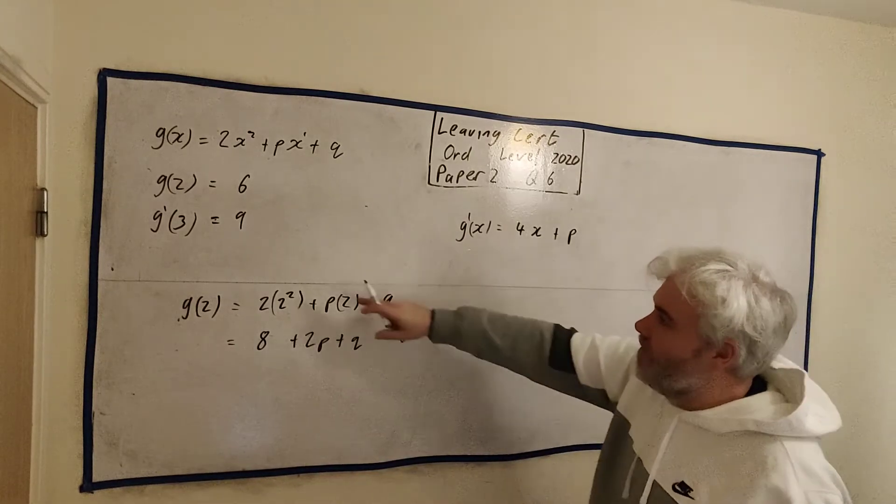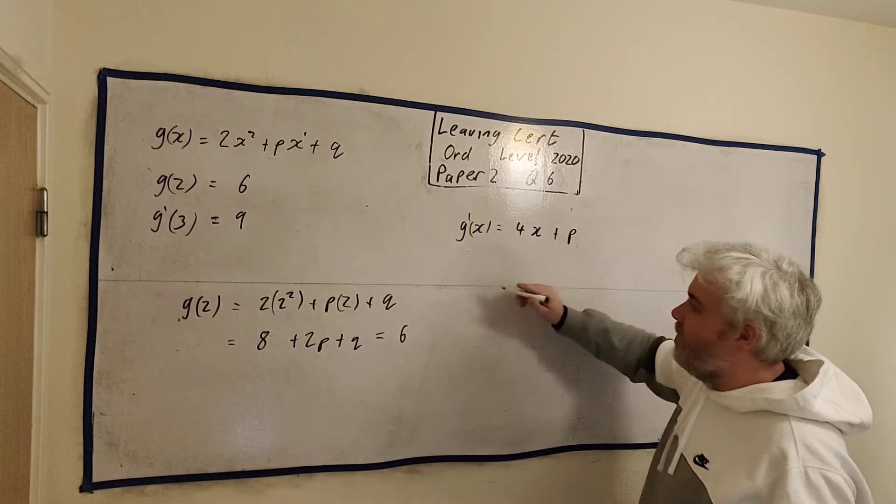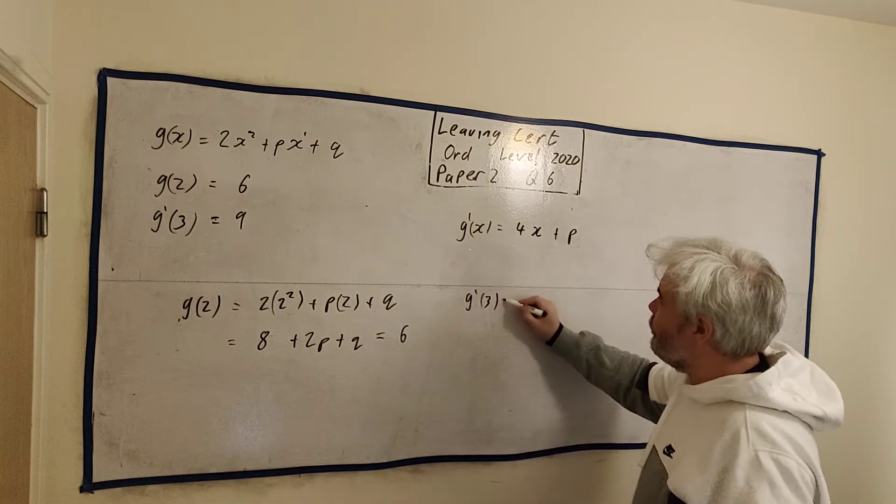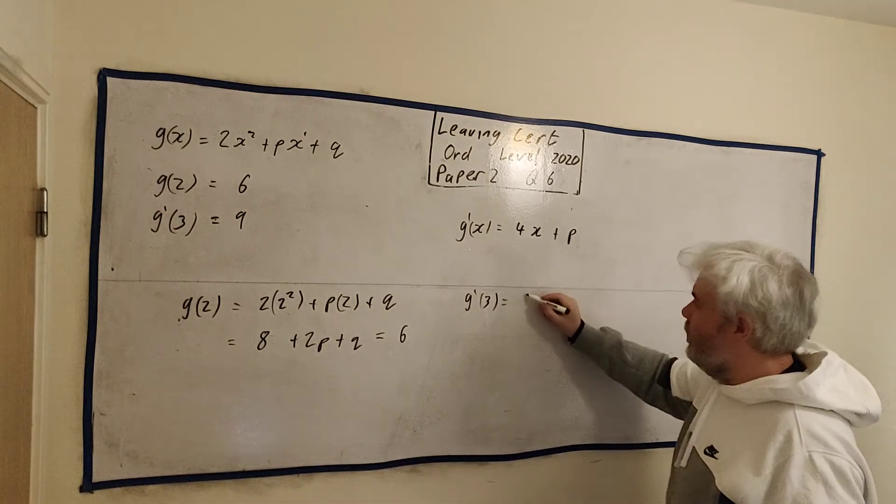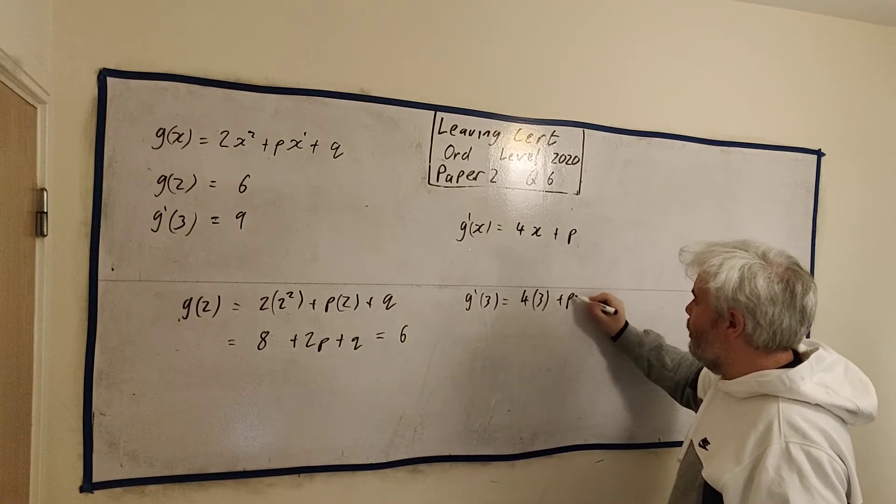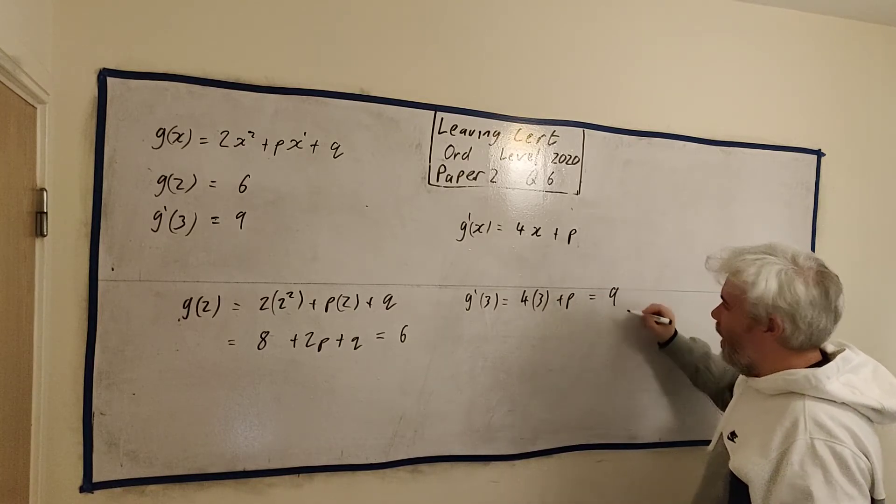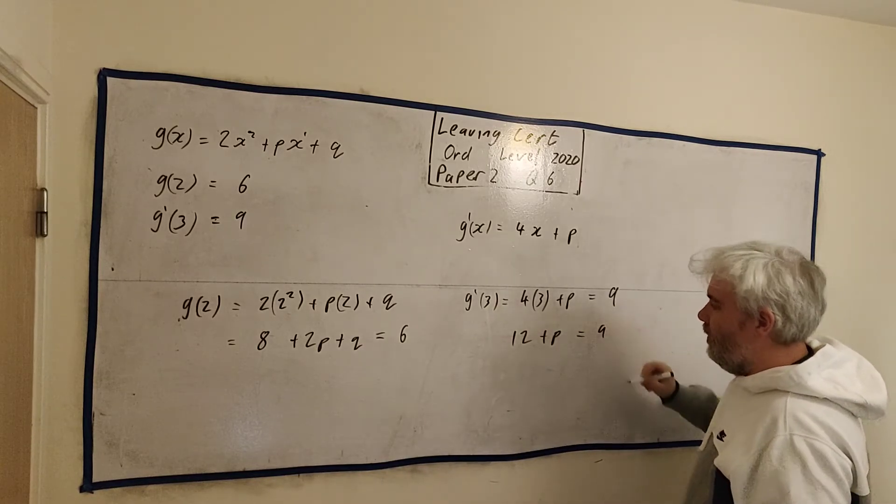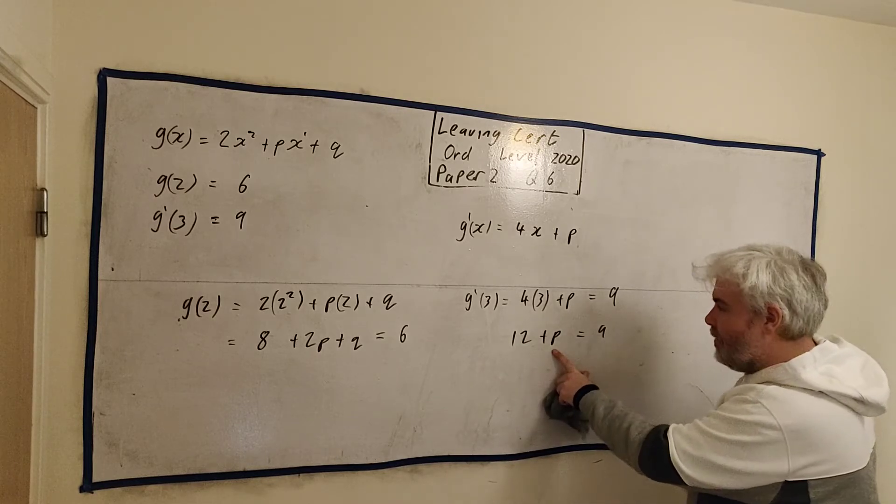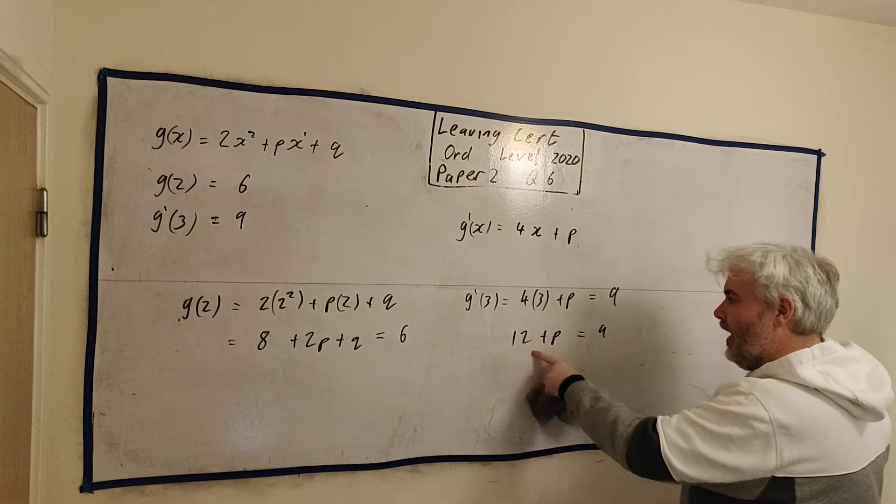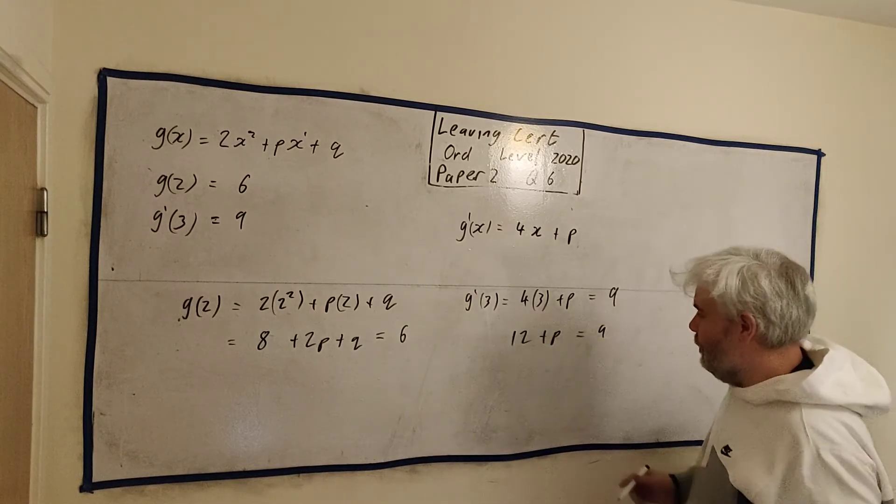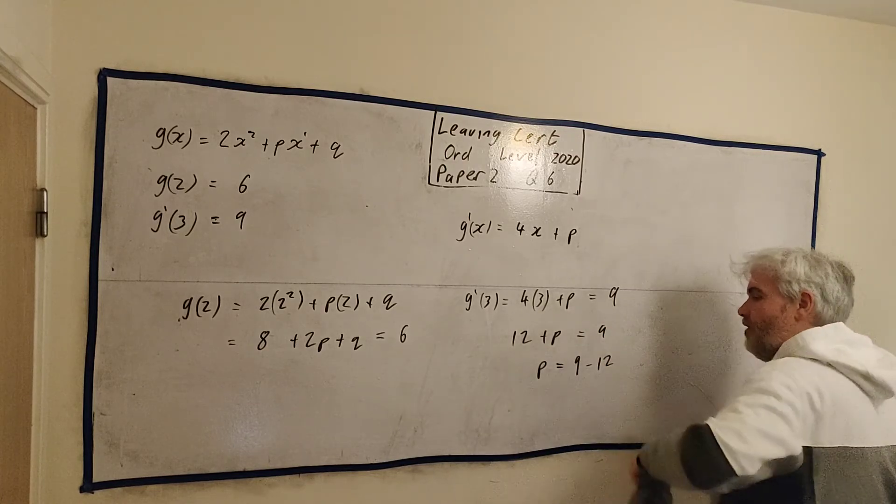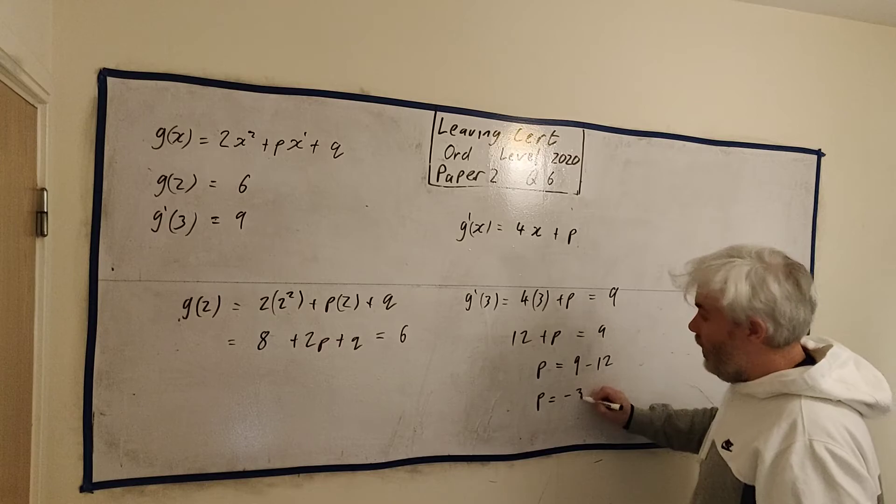Now this one's much easier because the second piece of information tells us when we put 3 into this, when g'(3), when 3 goes into this, 9 comes out. So let's put 3 in. 4 times 3 plus p, that must equal 9. Well, this we can just solve straight away. This is just 12 + p must equal 9. I think we can guess what p is. p must be -3. But let's do it more properly. p = 9 - 12. p = -3.